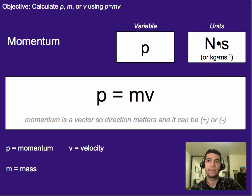I often like to write them as Newton-seconds because it's a little bit simpler and easier and actually means the same thing. We'll get into why that is later. Just a heads up: momentum is a vector, so direction matters. It can be positive or negative.